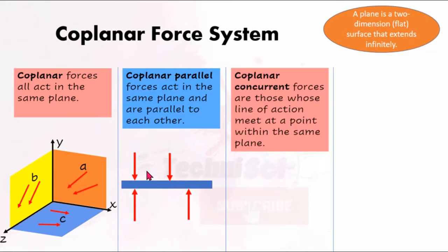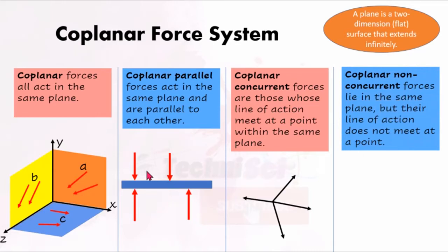Next we look at coplanar concurrent. Concurrent forces are forces whose lines of action meet at a point. Of course, being coplanar means they also lie in the same plane. So a coplanar concurrent force system has more than one force whose lines of action all meet at a single point, and all forces lie in the same plane.